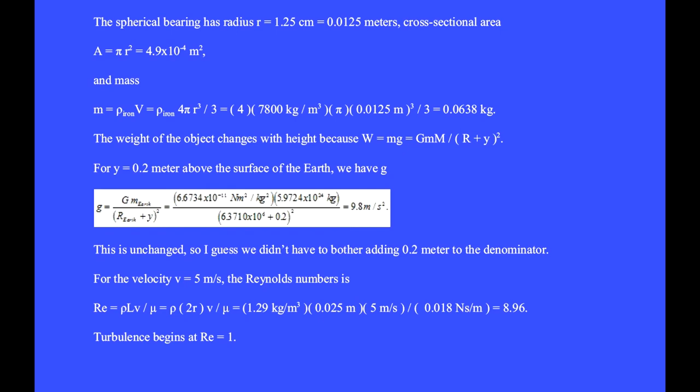For the velocity v equals 5 meters per second, the Reynolds number is rho L v over mu. We'll take the length to be the diameter of the sphere, L equal 2 r. And we get a Reynolds number 8.96. Turbulence begins at a Reynolds number of 1.